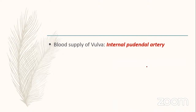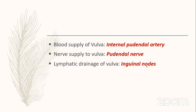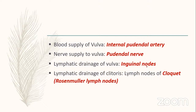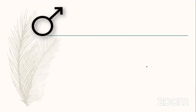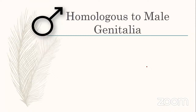Blood supply to the vulva is by the internal pudendal artery. Nerve supply is by the pudendal nerve. Lymphatic drainage of the vulva goes to inguinal nodes. Lymphatic drainage of the clitoris specifically goes to the lymph nodes of Cloquet — also called Rosenmuller lymph nodes. This is a frequently asked exam question.